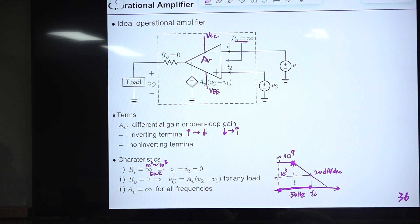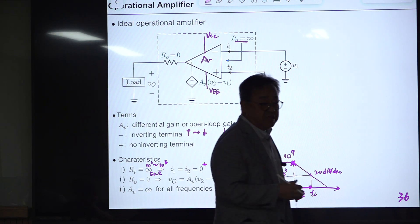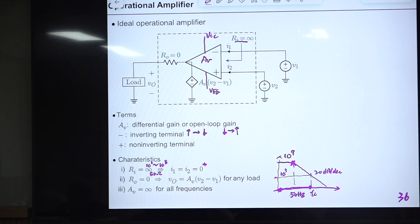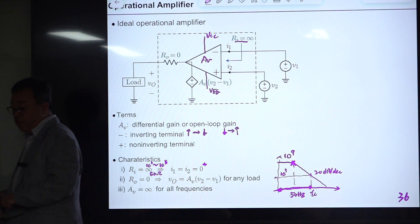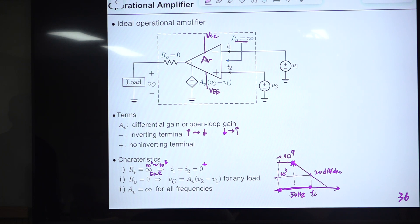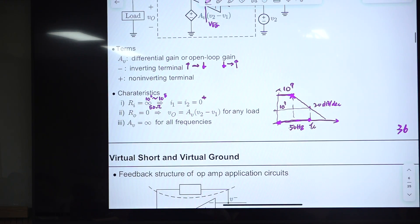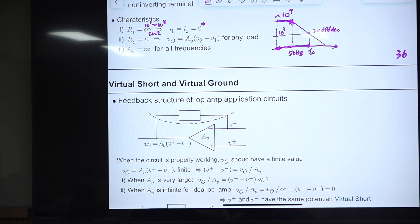Setting up the KCL node equation: the incoming current (V_O - V_ref)/Z_1 equals the outgoing current to the feedback impedance. After rearranging: V_O = V_ref + (V_ref/Z_1 - V_con/Z_1)·Z_2. If the DC gain magnitude |T(j·0)| = |Z_2(j·0)/Z_1(j·0)| is infinity, then the error V_O - V_ref must be zero in steady state.